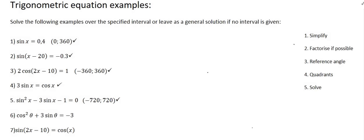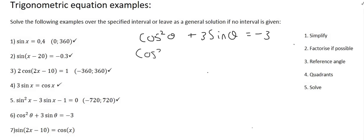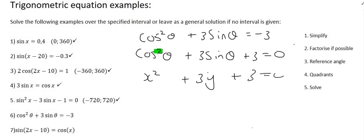Moving on to number six: cos squared theta plus 3 sin theta equals minus 3. This is a different type of question. We could imagine bringing the minus 3 to the left hand side and it almost looks like a trinomial — something squared, a normal term, and a constant. The only problem is we have a cos and a sin, which is almost like having x squared plus 3y plus 3. You can't have x and y in the same equation and still solve it.